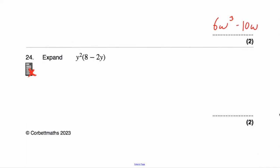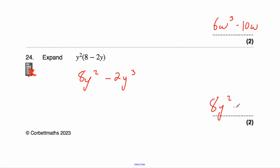Question number twenty-four asks us to expand y²(8 − 2y). We're going to multiply what's inside the brackets by y². Eight times y² is 8y². Then minus, and y² times 2y — we've got two, and y squared times y is y cubed. The answer is 8y² − 2y³.